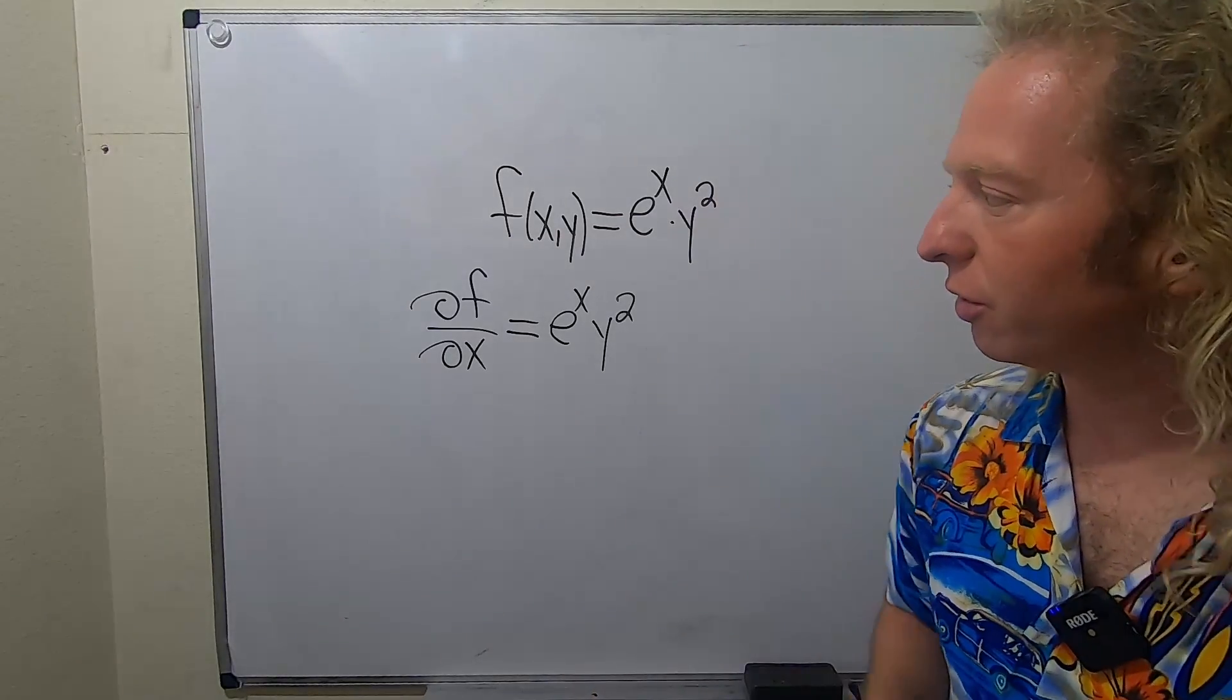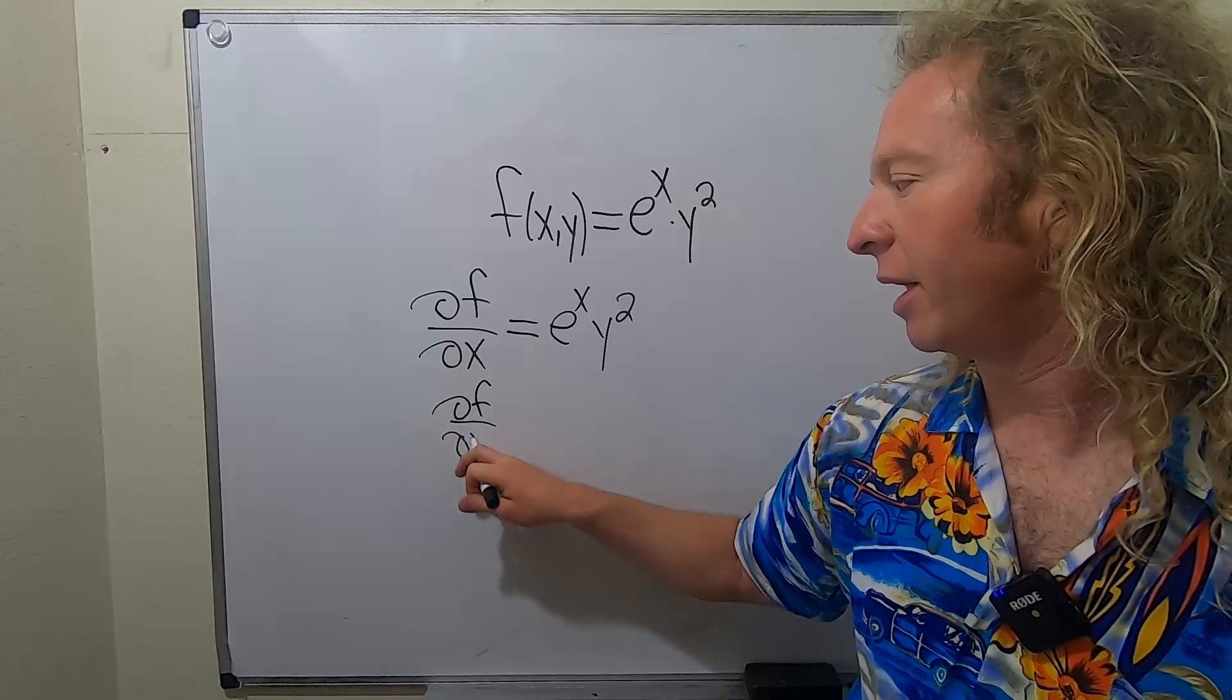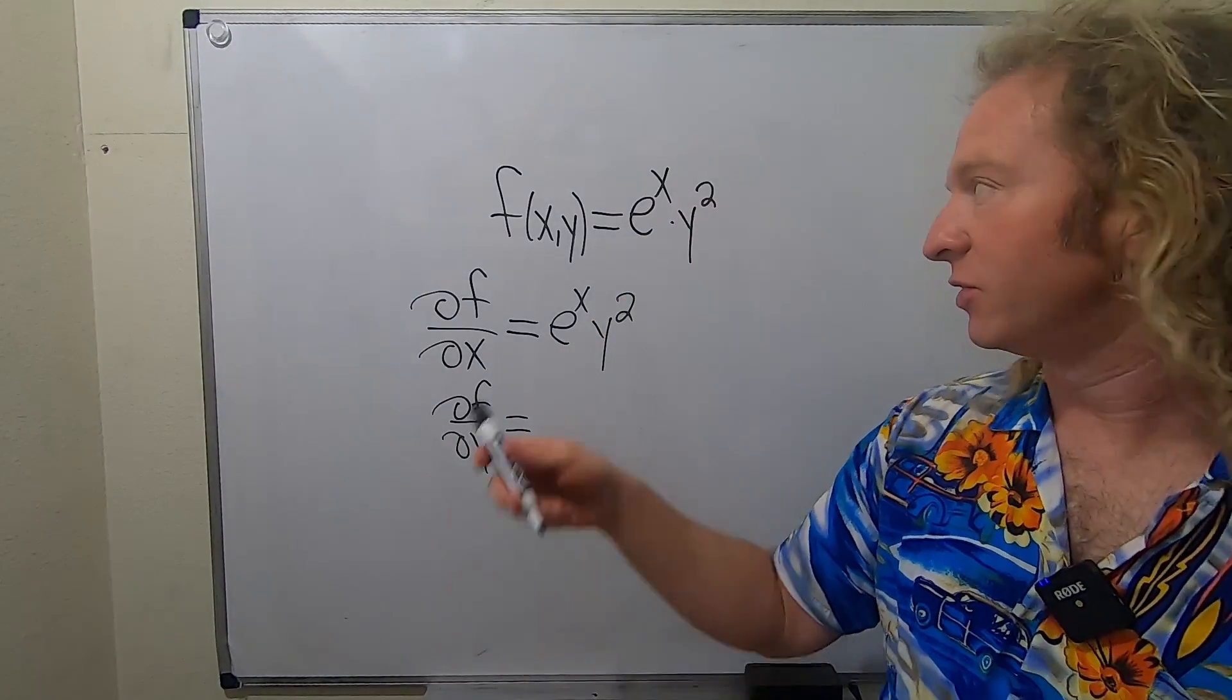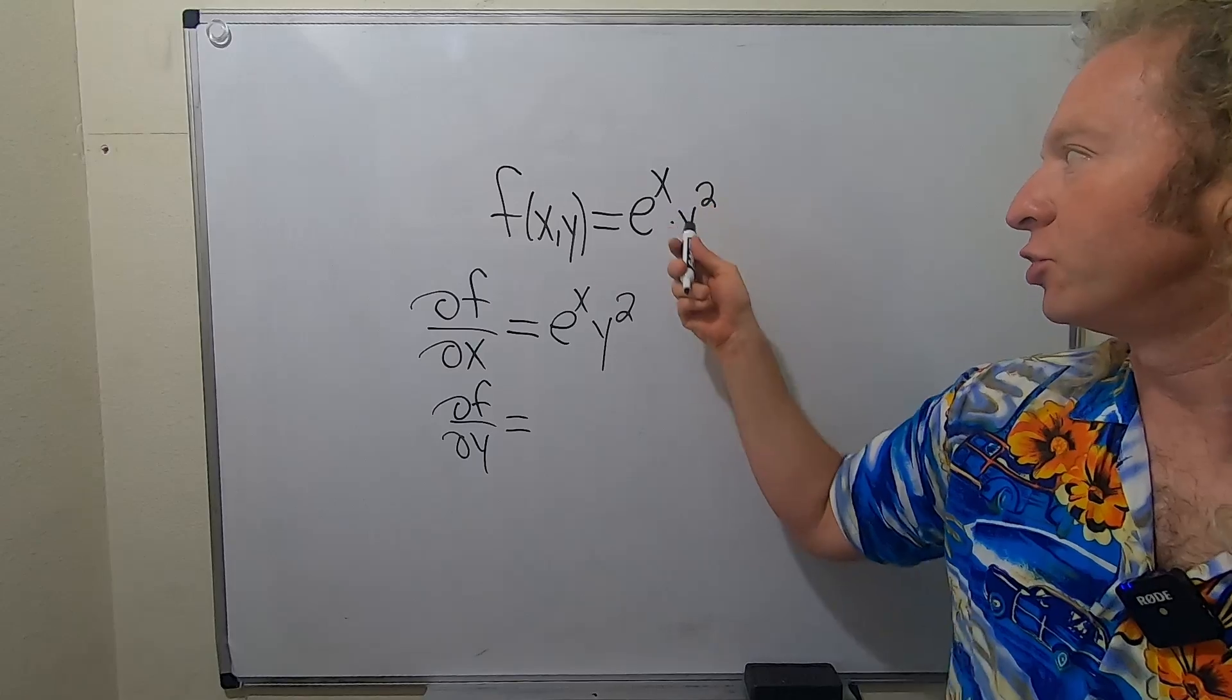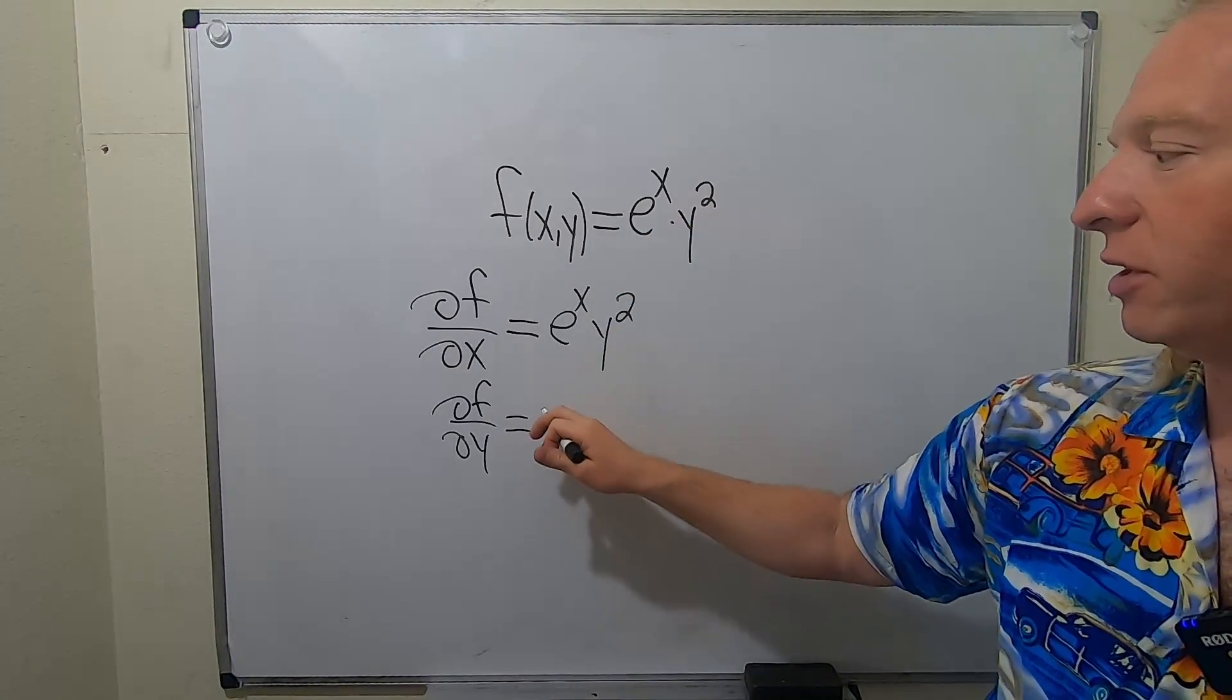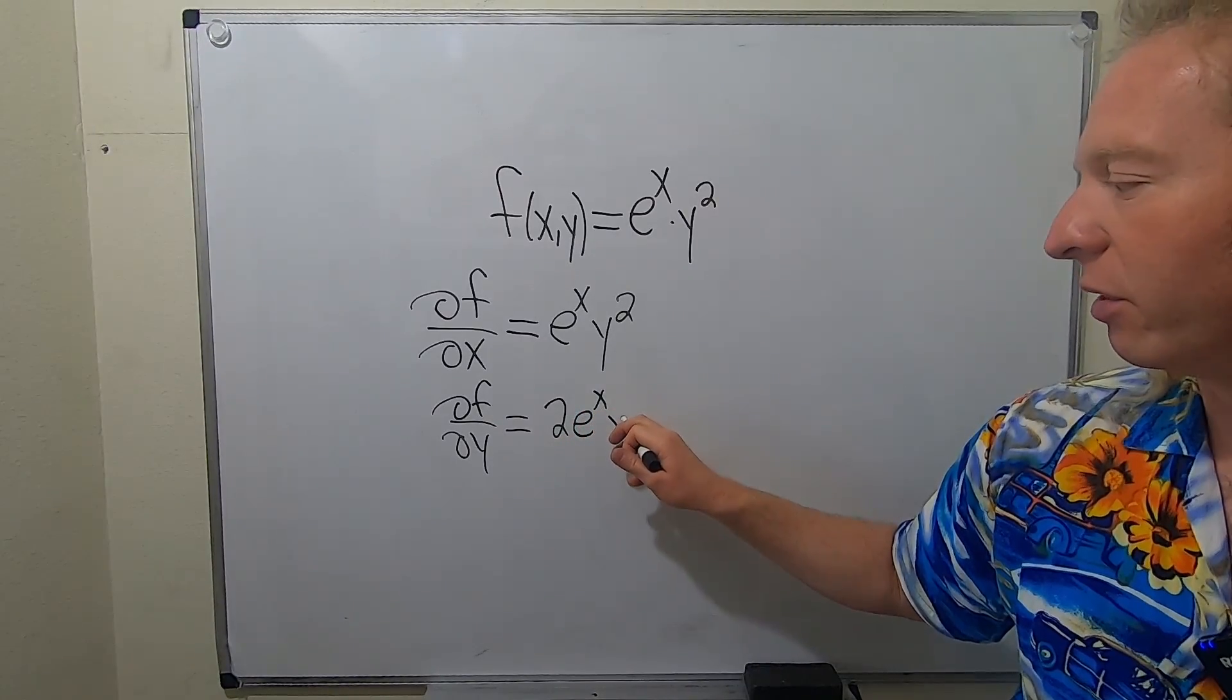Now we're going to compute the partial with respect to y. So del f, del y. Now we treat e to the x as a constant. When we take this derivative, the derivative of y squared is just 2y. So I'll go ahead and put the 2 in the front here. The e to the x is a constant, it hangs out, and we're left with y.